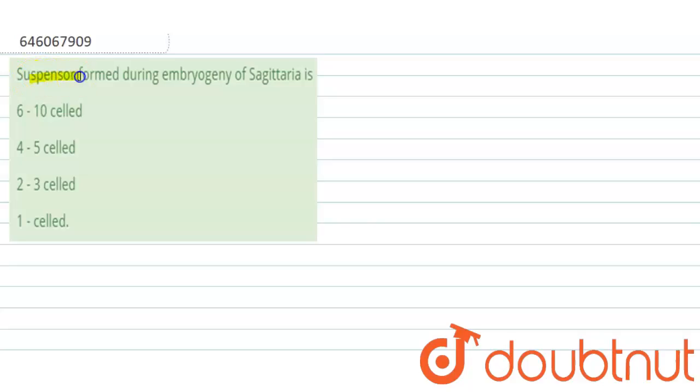So the question here is, suspensor form during embryogenic obsidemia is. We have 4 options here. Option A is 6 to 10 cell, option B is 4 to 5 cell, option C is 2 to 3 cell and option D is 1 cell. So let's see what will be the correct answer.